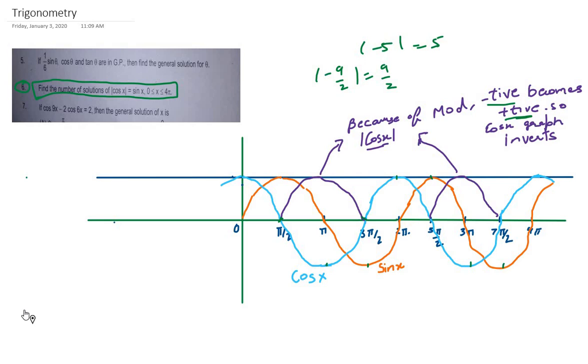We just change the negative value to positive from π/2 to 3π/2. Similarly, from 5π/2 to 7π/2, cos x is negative, so we change it to positive. Finally, if I just draw the graph for |cos x|...